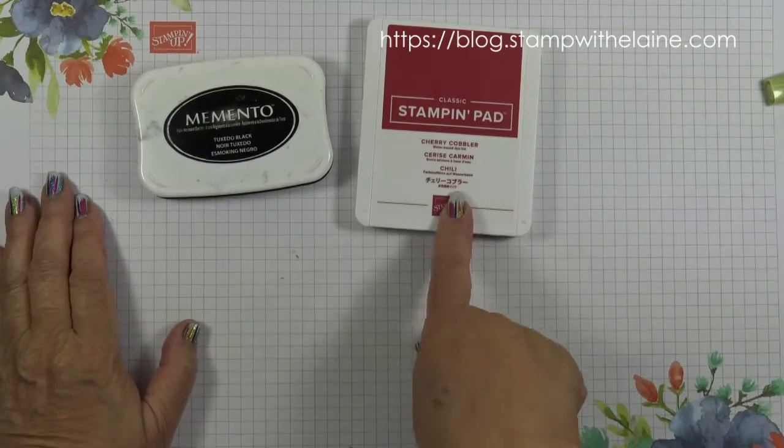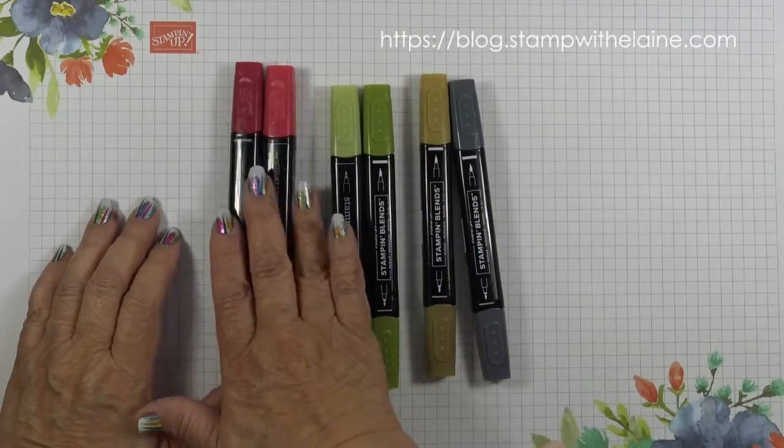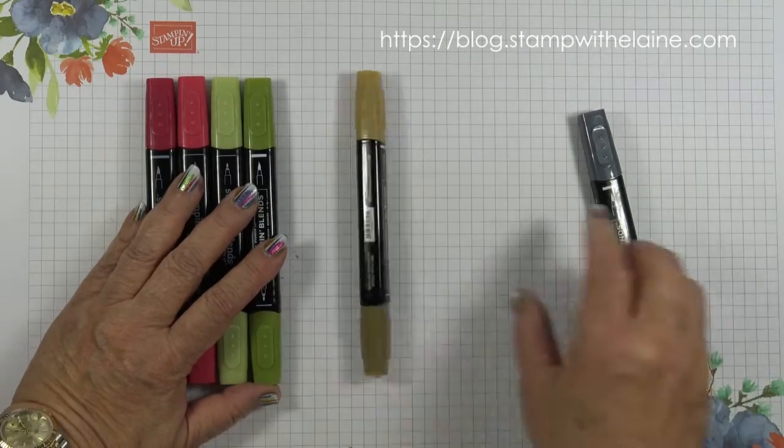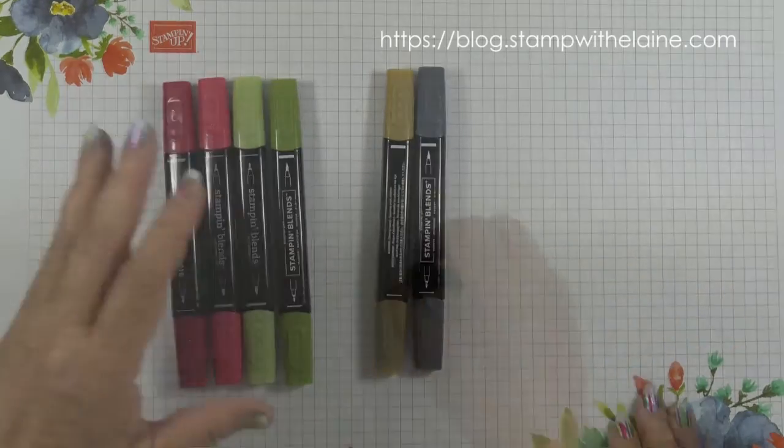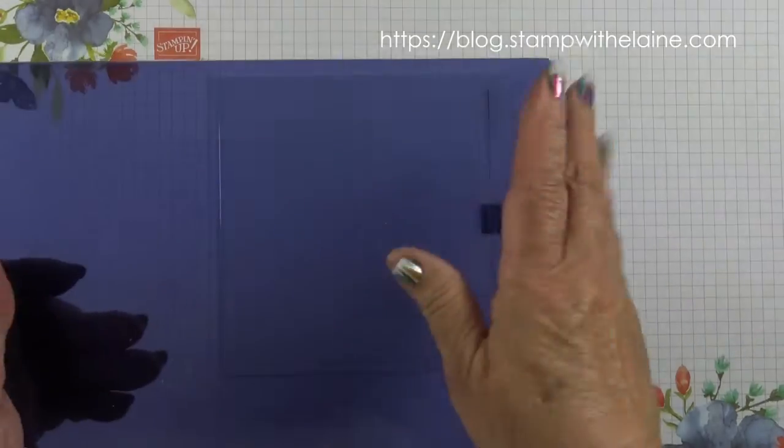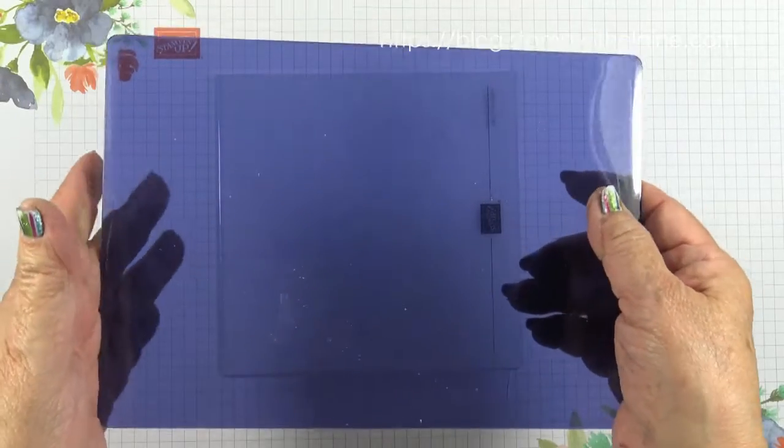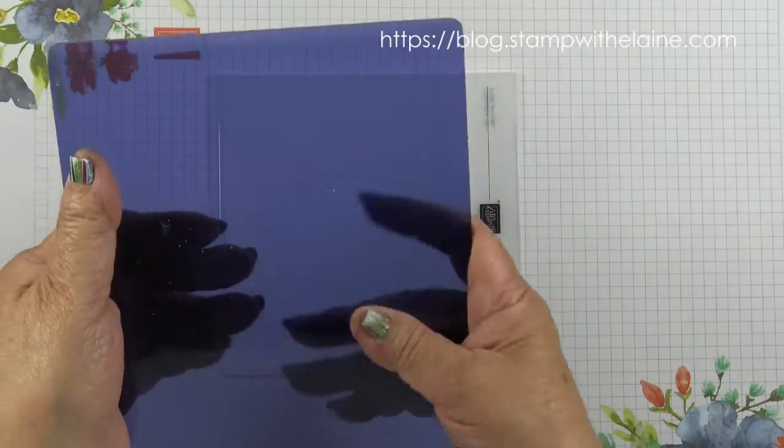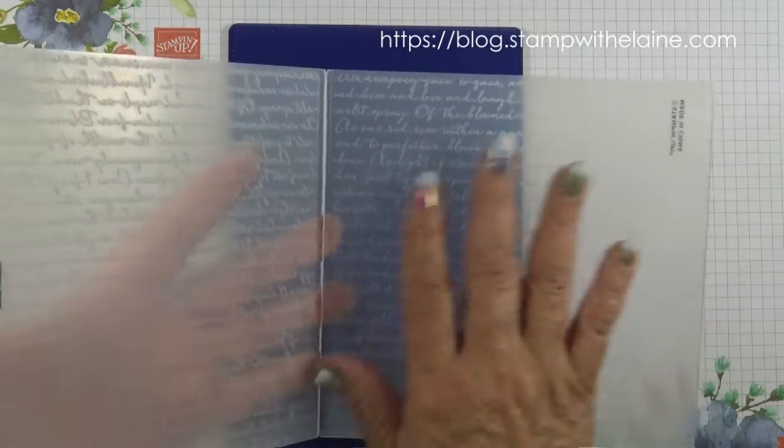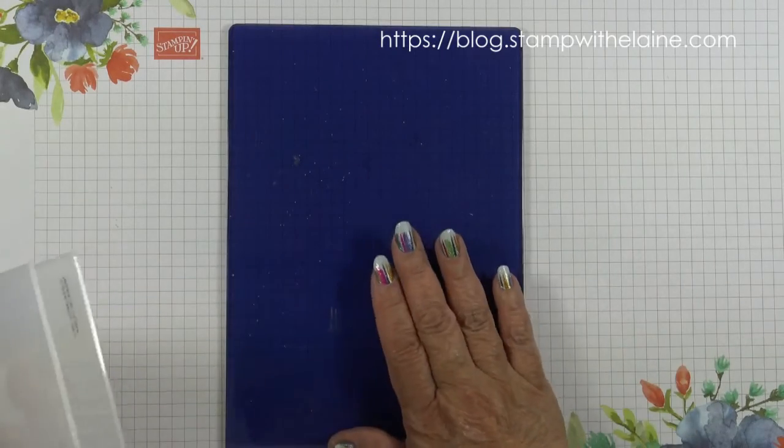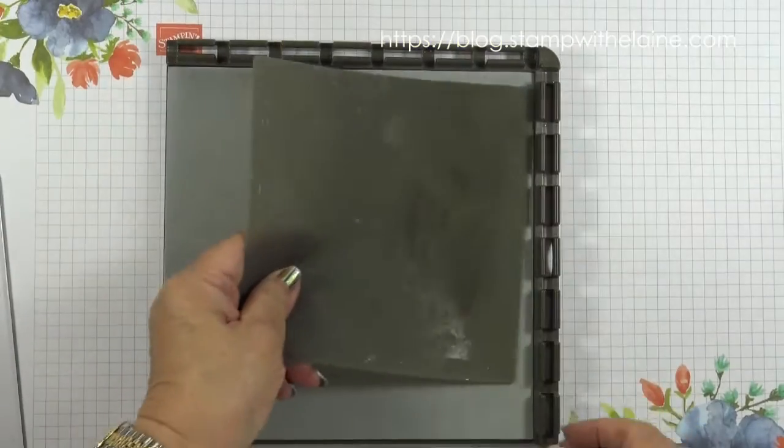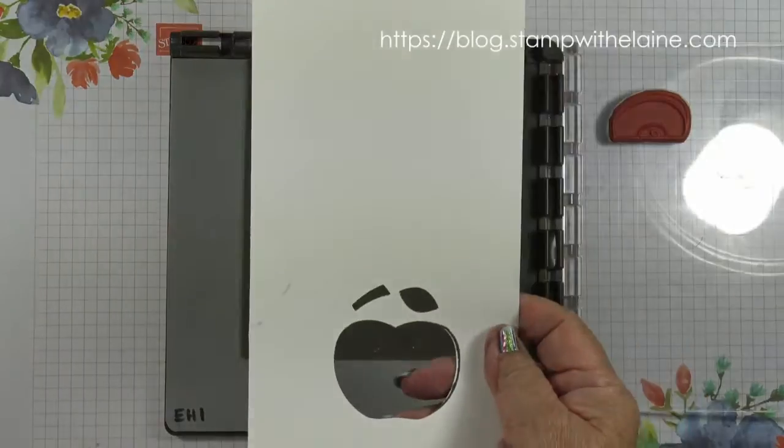Tuxedo black memento ink and cherry cobbler ink. Stamping blends in combo packs the cherry cobbler and old olive, the soft suede dark and the black basic black dark. You also need a sponge dauber. The scripty 3d embossing folder and if you have one the new 3d embossing plate. I highly recommend this because this gives the best results. I've tried shims and everything with the new type of embossing folder and really this blue plate is indispensable because it works best with this. Silicone mat, the Stamparatus and some whisper white scrap.